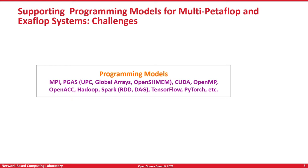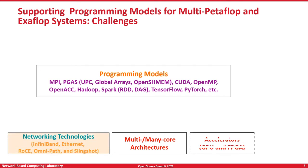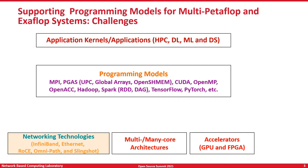All these things come back to the middle box called programming models. There are different programming models for different kinds of environments — it can be MPI, FIGAS, CUDA, TensorFlow, PyTorch, Hadoop, Spark, etc. If you look at how systems are being built with commodity computing environments — multi-core, many-core architectures, different networking technologies, different kinds of accelerators — at the top we want application kernels for HPC, DL, ML, or data science to get the best performance.